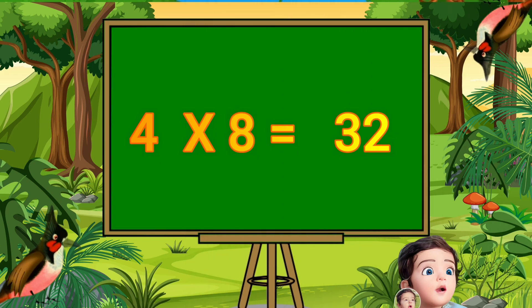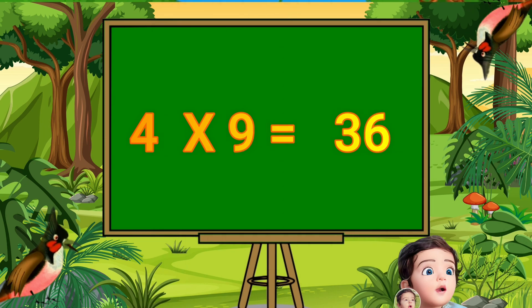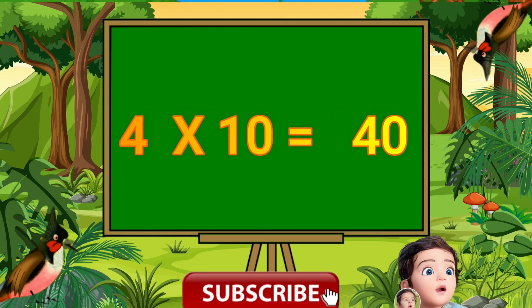Four, eight's a thirty-two. Four, eight's a thirty-two. Four nines are thirty-six. Four nines are thirty-six. Four tens are forty.